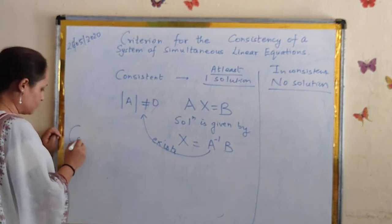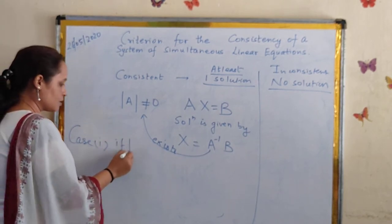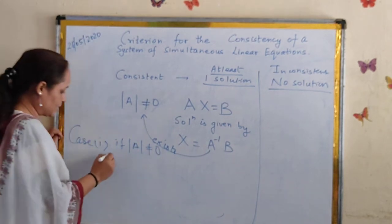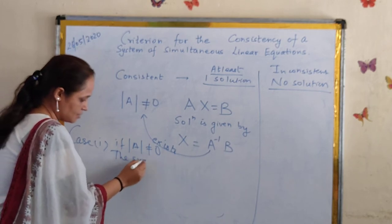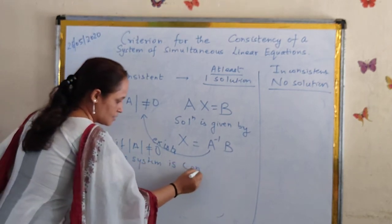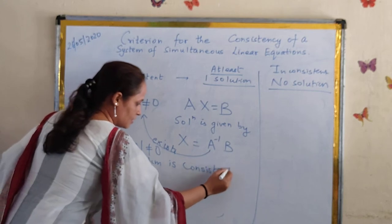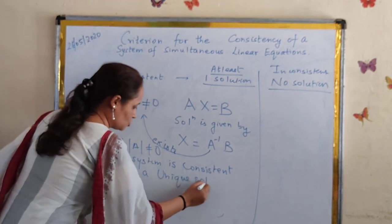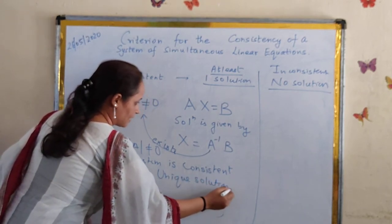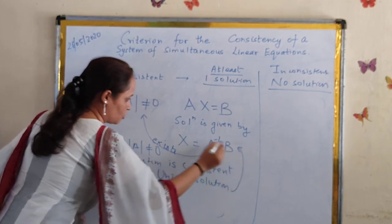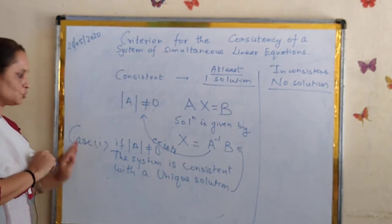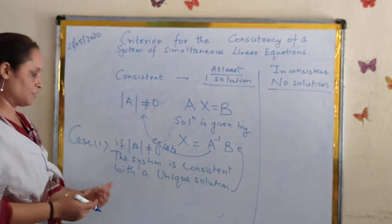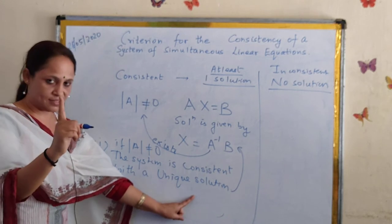Let's write down all the cases when consistency and inconsistency can occur. Case one: if the determinant is non-zero, the matrix is non-singular. Then we can say the system is consistent with a unique solution, and the solution is given by X = A inverse B. If matrix A is non-singular, the system is consistent because we can find a solution, and in that case the solution is unique — one solution.